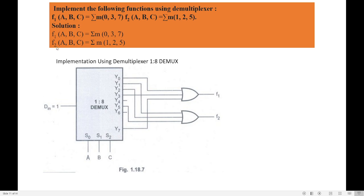For function f2, which consists of minterms 1, 2, and 5, take output wire y1, wire y2, and wire y5 and connect all three to an OR gate. That gives you function f2 as the sum of minterms 1, 2, and 5. Both functions f1 and f2 are now implemented using the demultiplexor.